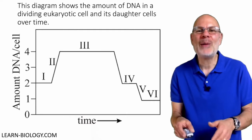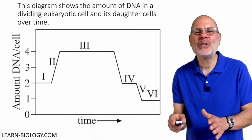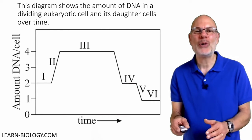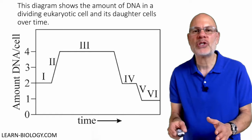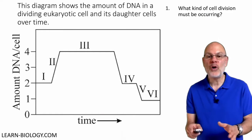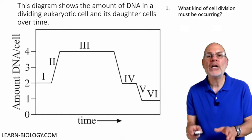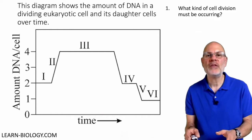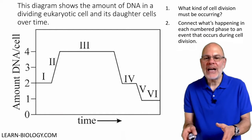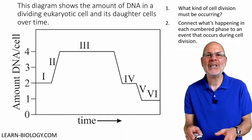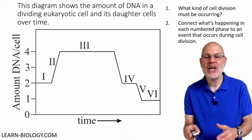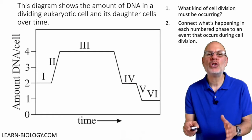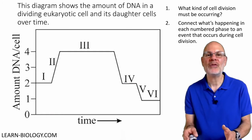This diagram shows the amount of DNA in a dividing eukaryotic cell and its daughter cells over time. Two questions: First, what kind of cell division must be occurring? Second, connect what's happening in each numbered phase to an event that occurs during cell division.